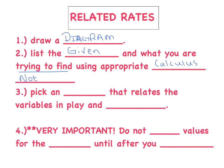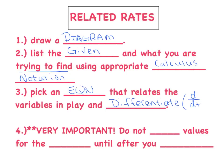I'll certainly try to model that the best I can as we go through these four examples. Number three, I want you to pick an equation that relates the variables in play, and then we'll differentiate. We're going to differentiate with respect to t. And probably the most important thing I want to stress is that we do not substitute any values for the variables until after we differentiate.